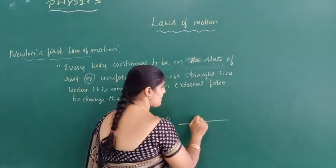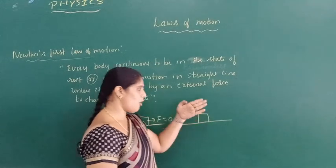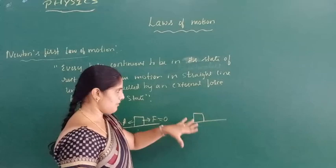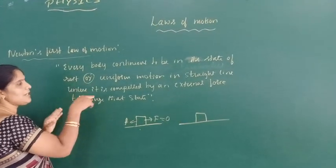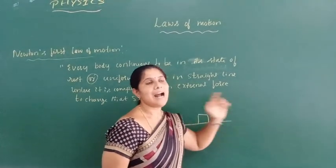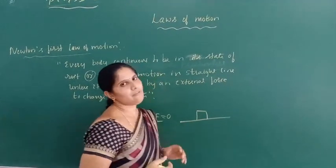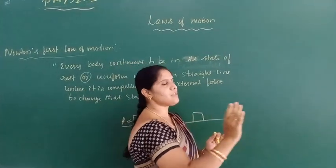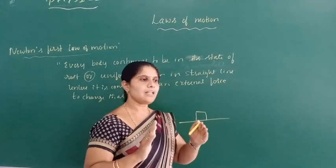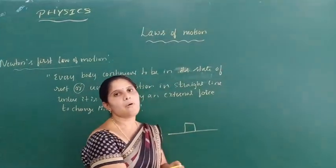For example, the same block — some object is moving along a straight path over some surface. When the object moves on the straight path over the surface, it moves continuously until some external force is applied to stop the body. For example, if a ball rolls over a frictionless surface, the ball keeps moving continuously until some external force is applied to stop the ball.